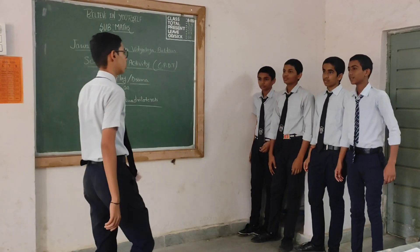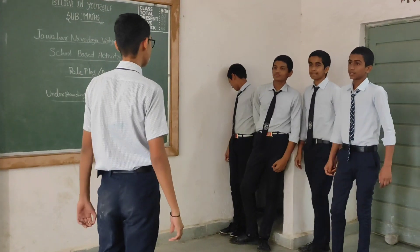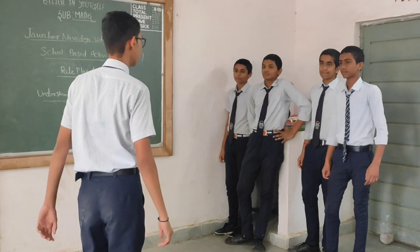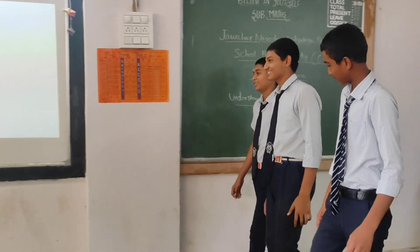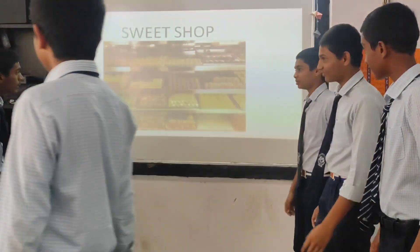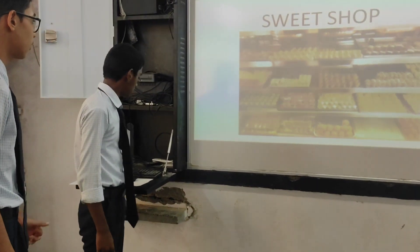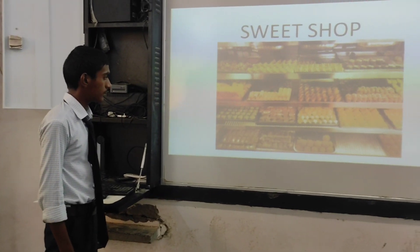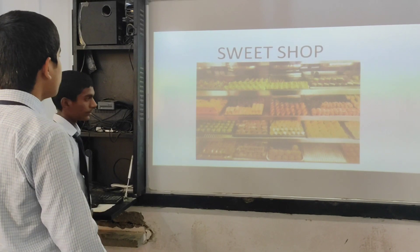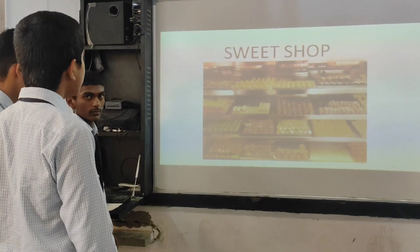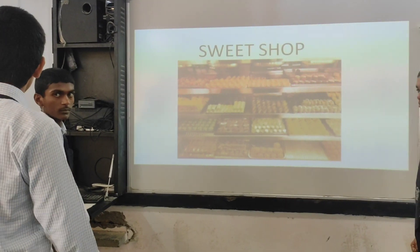Hi friends, how are you? What are you doing? I am going to buy sweets because guests are coming. Are you free to come with me? Yes. Welcome to our shop. What type of sweets do you want? I want to buy kajubati and barfi because I love it so much. You want to buy kajubati? See the shape of kajubati — it is in the shape of a parallelogram and rectangle. Do you want to buy it? Yes.